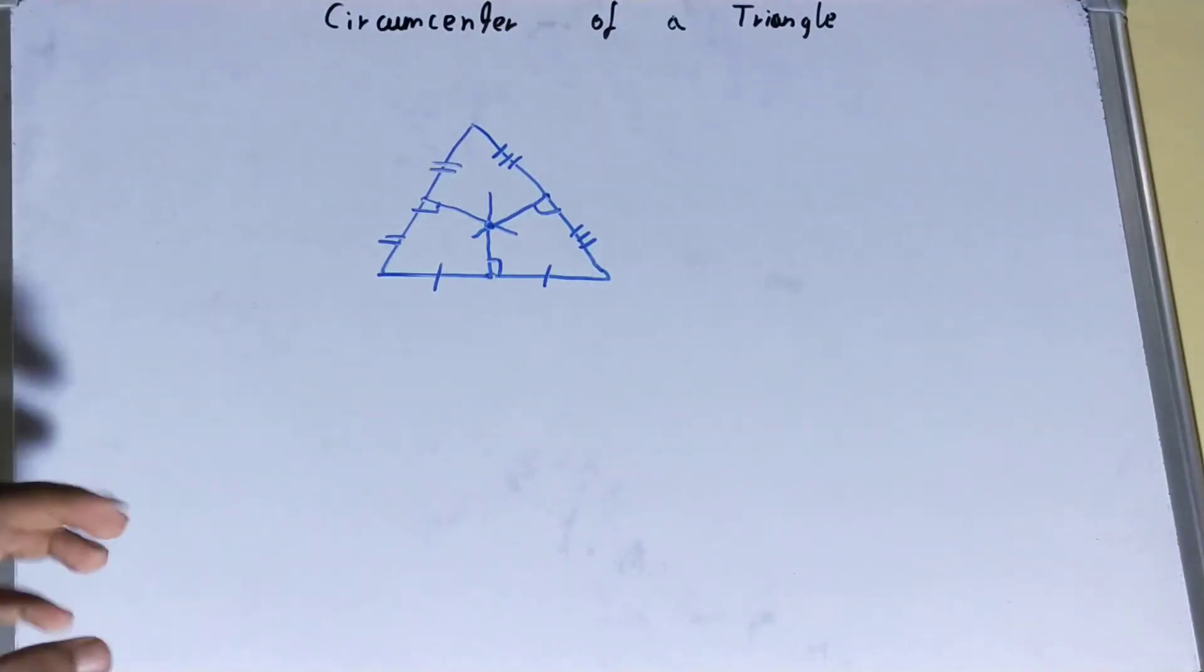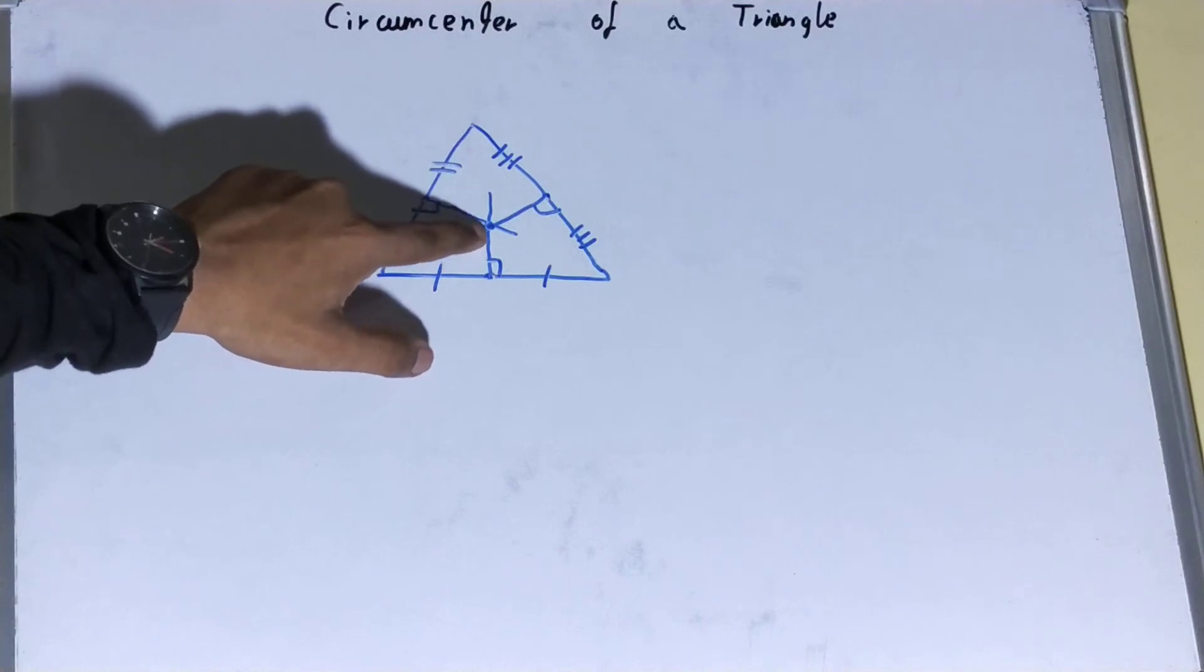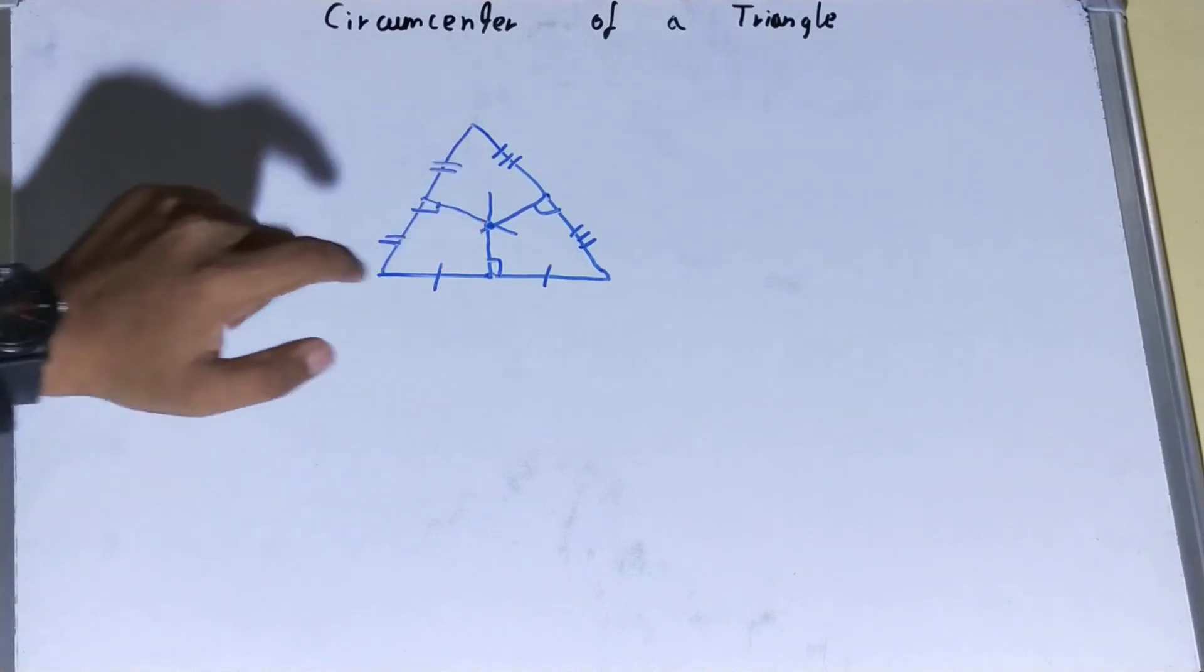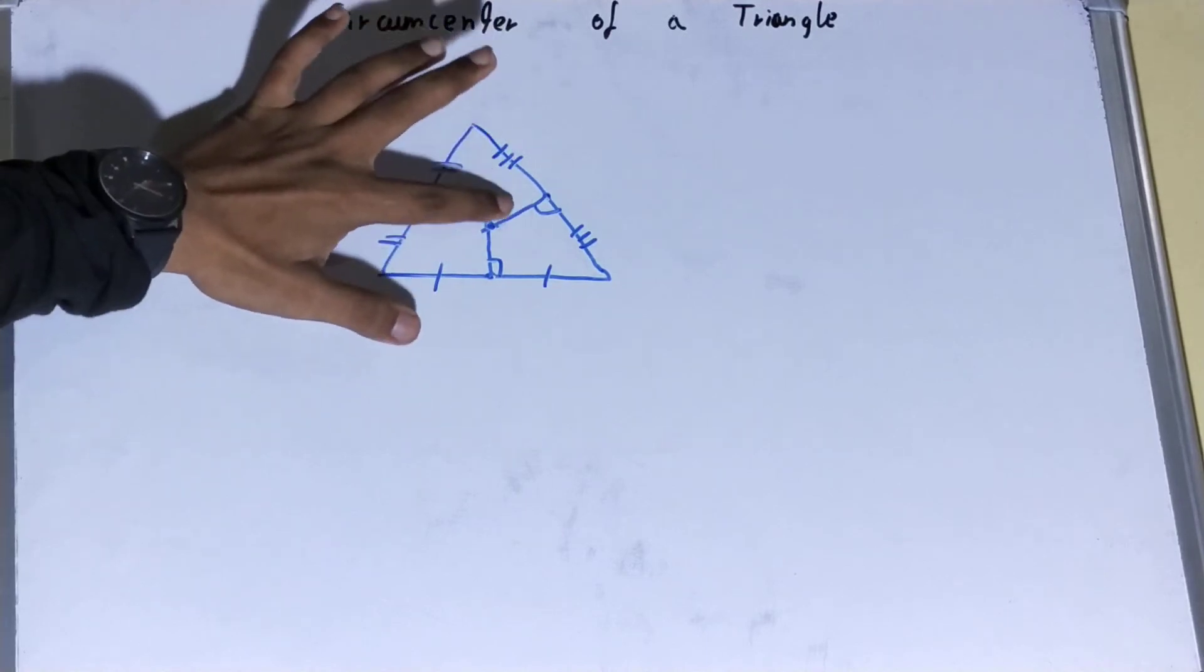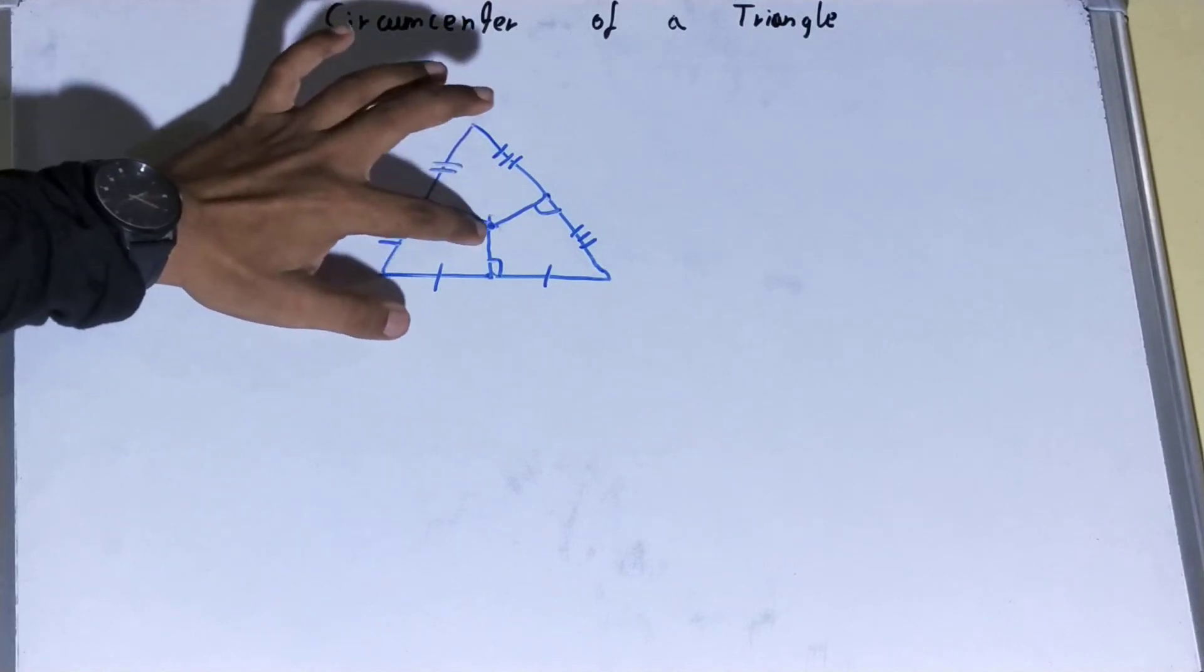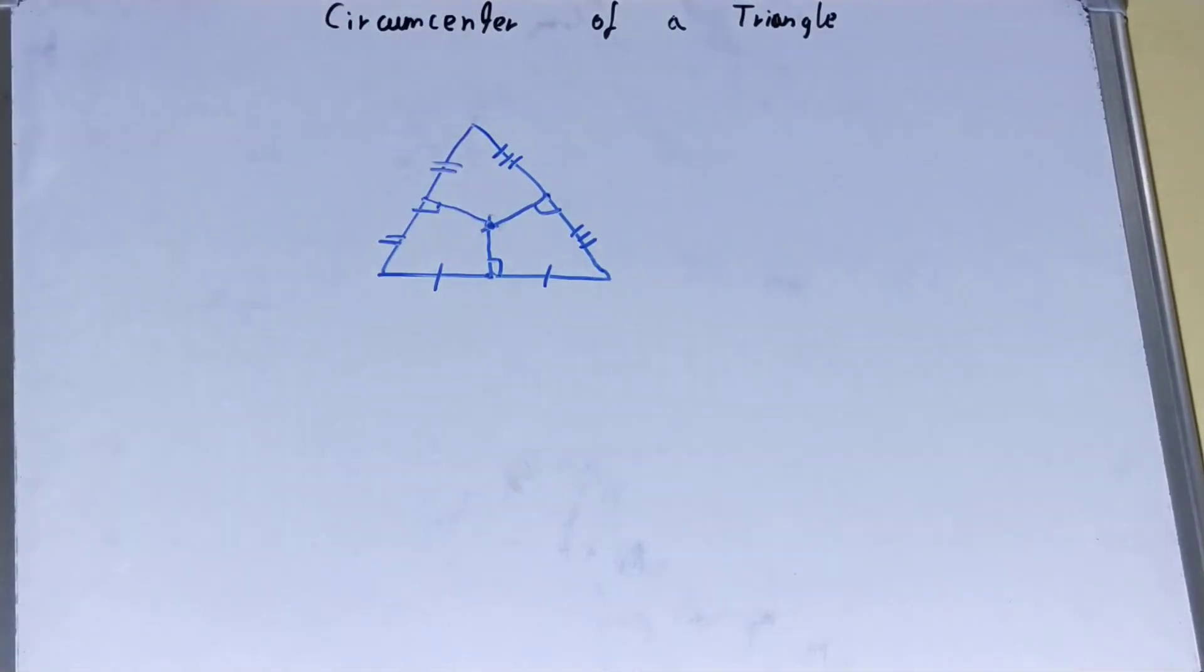Now let me mark this for you. This is our circumcenter. So we understood how to find the circumcenter of a triangle, but it has one property.